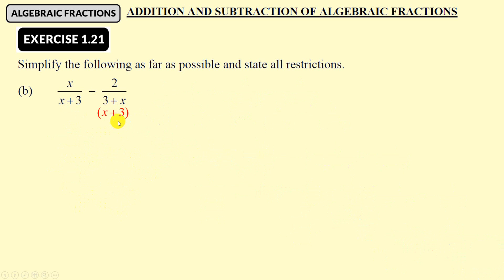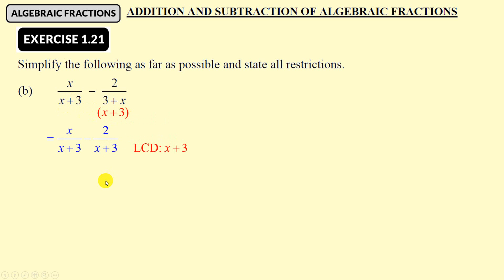The next one — simple change: 3 plus x becomes x plus 3. Common denominator: x plus 3. That being the case, nothing changes because they both have x plus 3. So therefore, x minus 2.